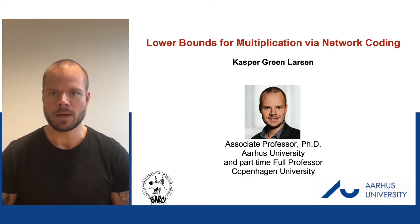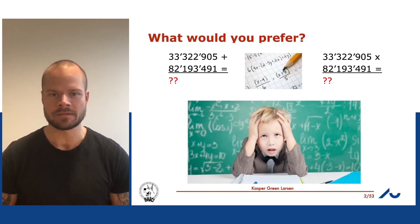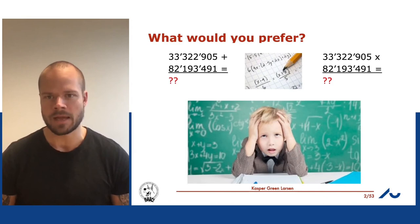As mentioned, this talk is going to be about lower bounds for multiplication. Let's start with a basic question: if I gave you two eight-digit numbers, would you rather multiply or add them together? I think most of you, even with a piece of paper and pencil, would prefer to add the two numbers rather than multiply them.